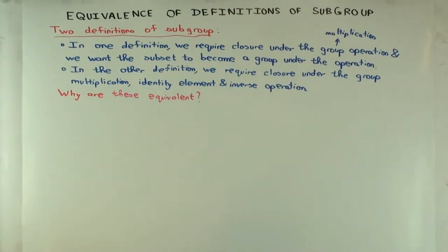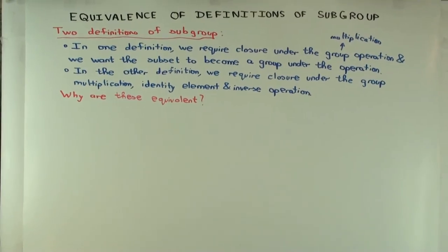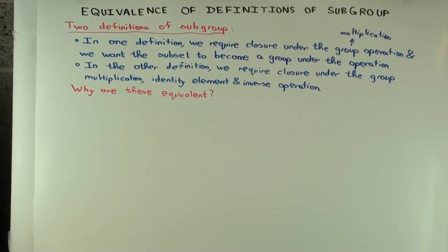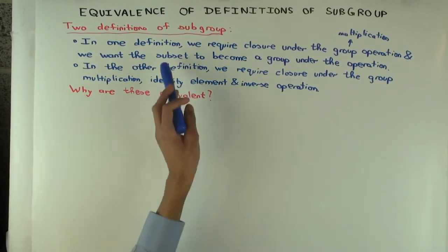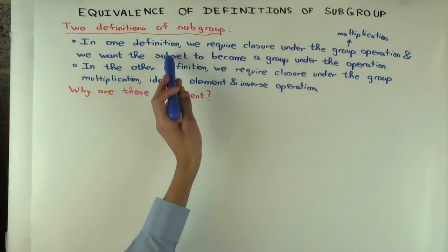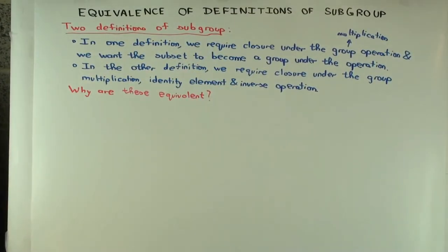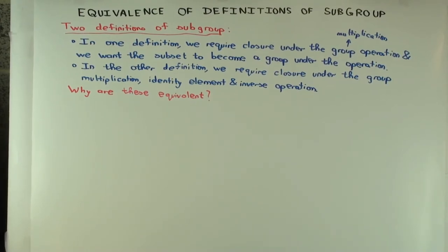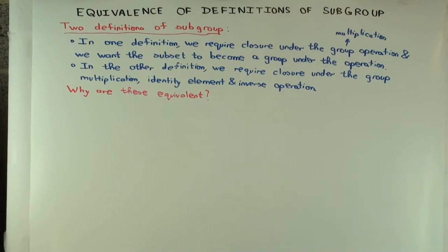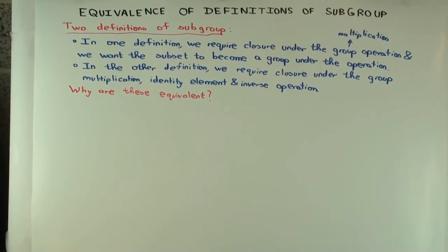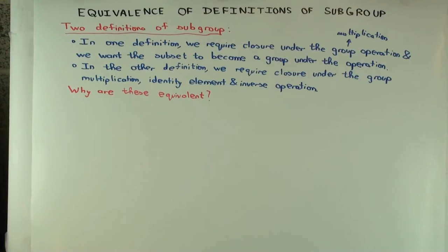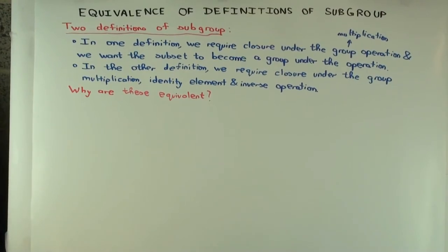In order to show they're equivalent, we need to show that the identity element of the subset — if it has an identity element — has to be the same as that of the whole group. Now, do we have to worry about inverses? Not really, because once they have the same identity element, since two-sided inverses are unique, the two-sided inverse, if it is there in the subgroup, has to be the same. So the main thing we have to worry about is the identity element.